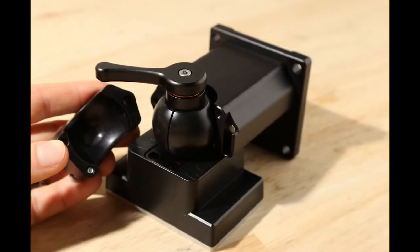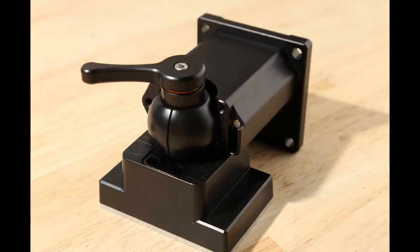If we unscrew these three bolts we can see how the joint works. The ball joint has a split and there is a cylinder inside the ball joint. When the calibration bolt is tightened it clamps down on the ball joint and the ball joint clamps down on the cylinder.